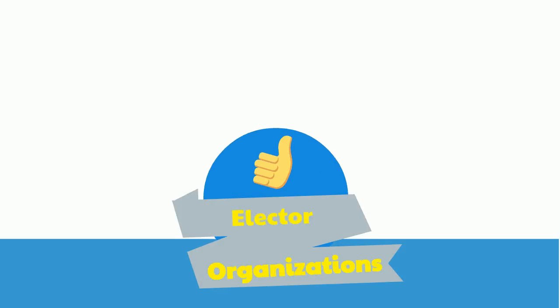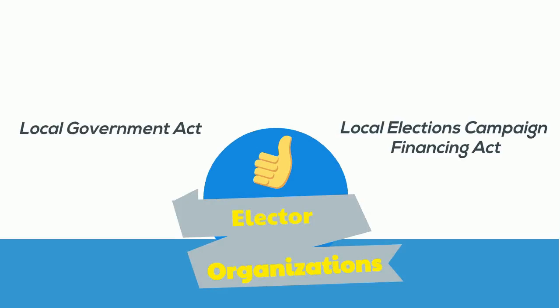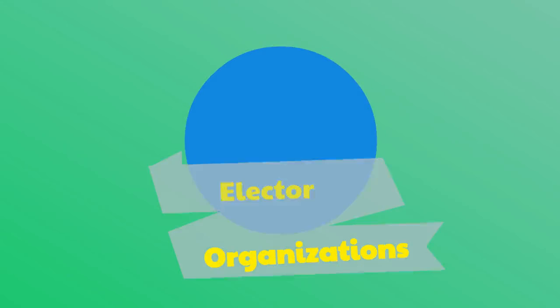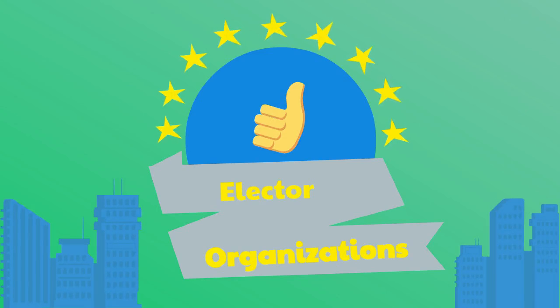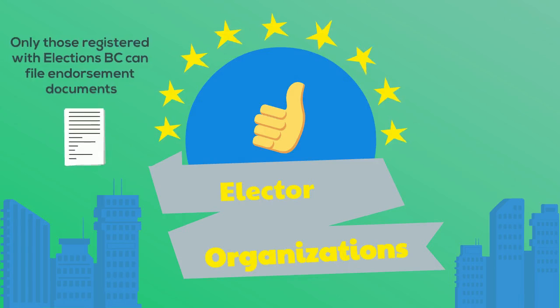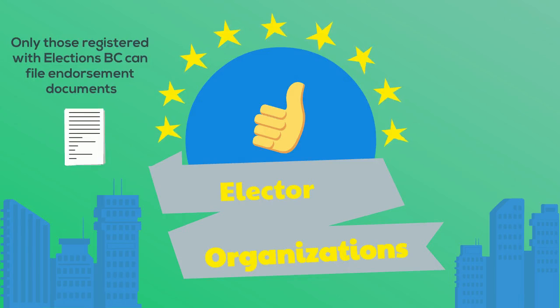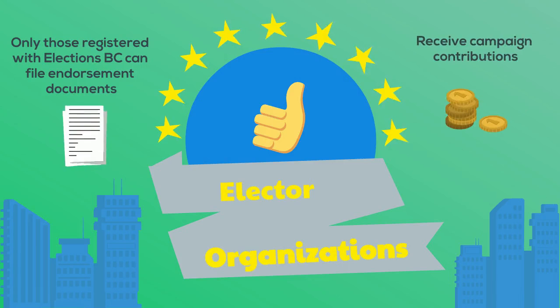Now let's learn about another participant: elector organizations, which are regulated under the Local Government Act and the Local Election Campaign Financing Act. Elector organizations are generally found in larger municipalities. They endorse and promote their candidates in local elections and can have their name or acronym on the ballot beside their candidates. Only elector organizations registered with Elections BC can file endorsement documents, receive campaign contributions, and incur election expenses.